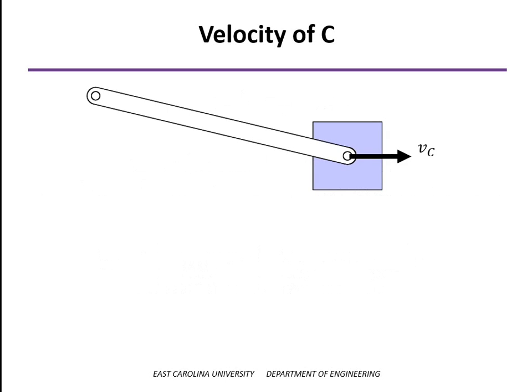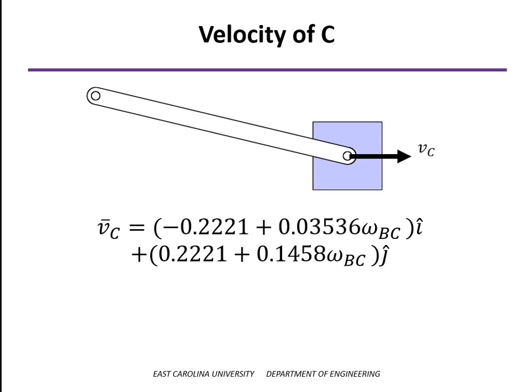Now we have to recognize that point C is a point not only on the connector, but also on the slider. The slider is undergoing pure translation in the x direction horizontally only.